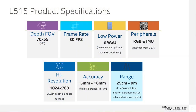The L515 generates a depth map that is 70 degrees wide by 55 degrees tall. Depth is output in resolution options of XGA, VGA, and QVGA. All depth frames are output at 30 frames per second. The L515 also has a 2 megapixel color camera and an IMU built-in. So all together, the camera can stream a color image, depth image, and IMU information.